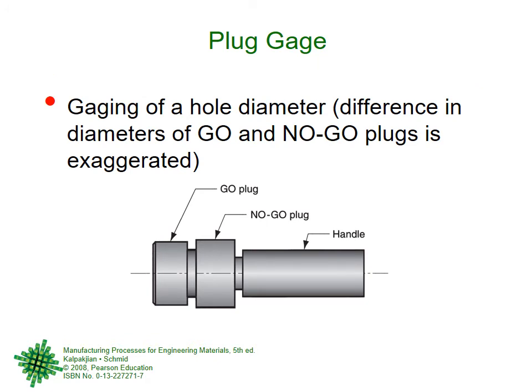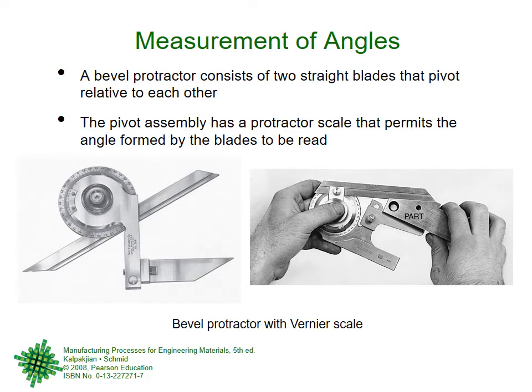A plug gauge is used to measure inside dimensions such as holes. It has a handle with a go part and a no-go part. If you are measuring a hole in a part, you push the plug gauge through — the go side should enter the hole, and the no-go side should not. This immediately tells you whether the hole size is correct. The plug gauge is also a go/no-go gauge but designed for inside diameters.